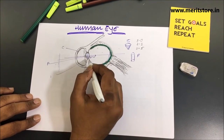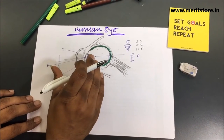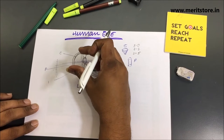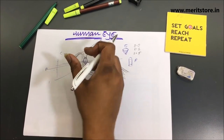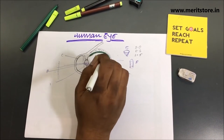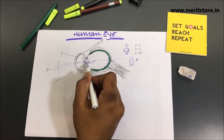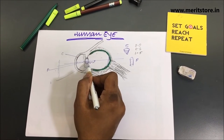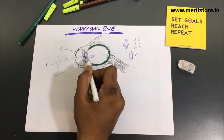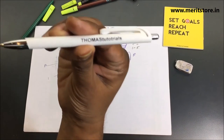The focal length of the eye lens decreases while viewing nearer objects, and the lens becomes thicker. This gives a sharp image of the nearby object on the retina. This ability of the lens to adjust its focal length is called the power of accommodation. You can take a pen and keep it at various distances from your eye — you can see it at all distances.